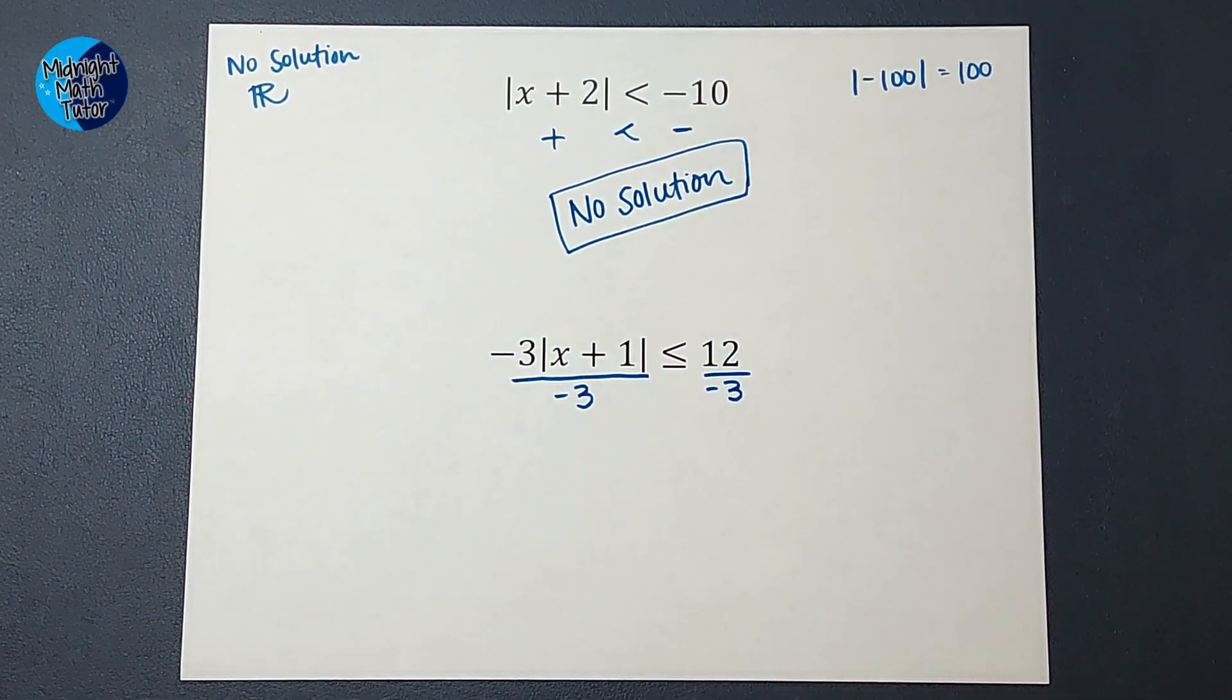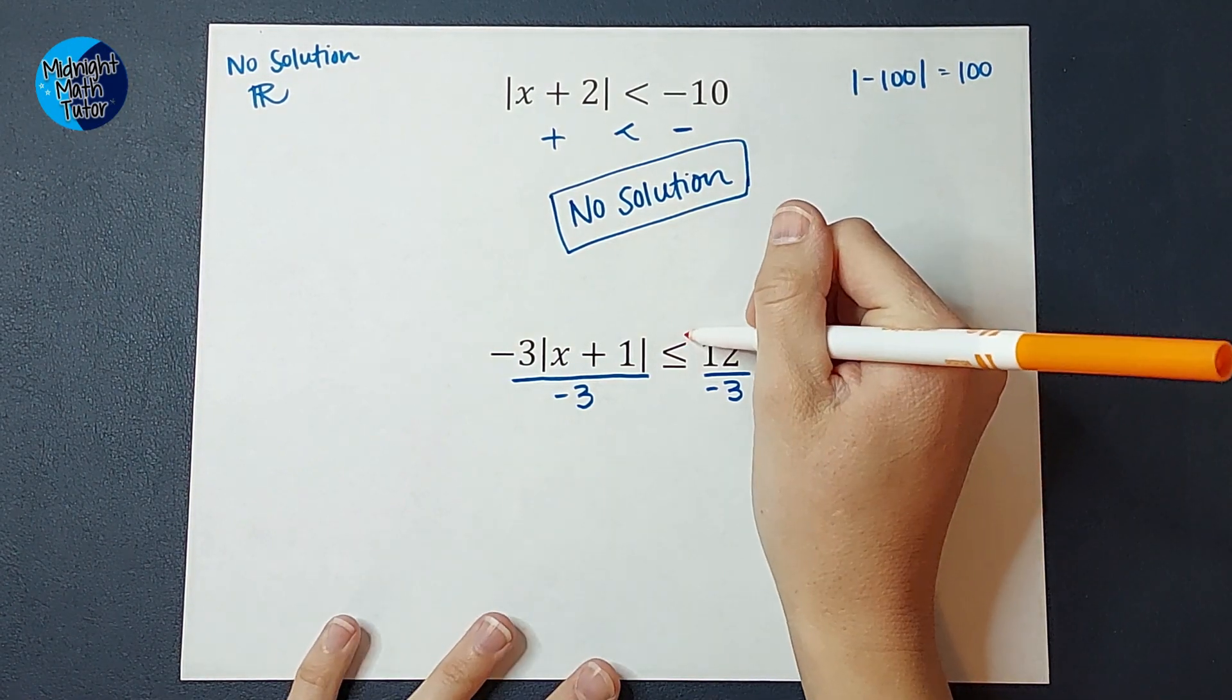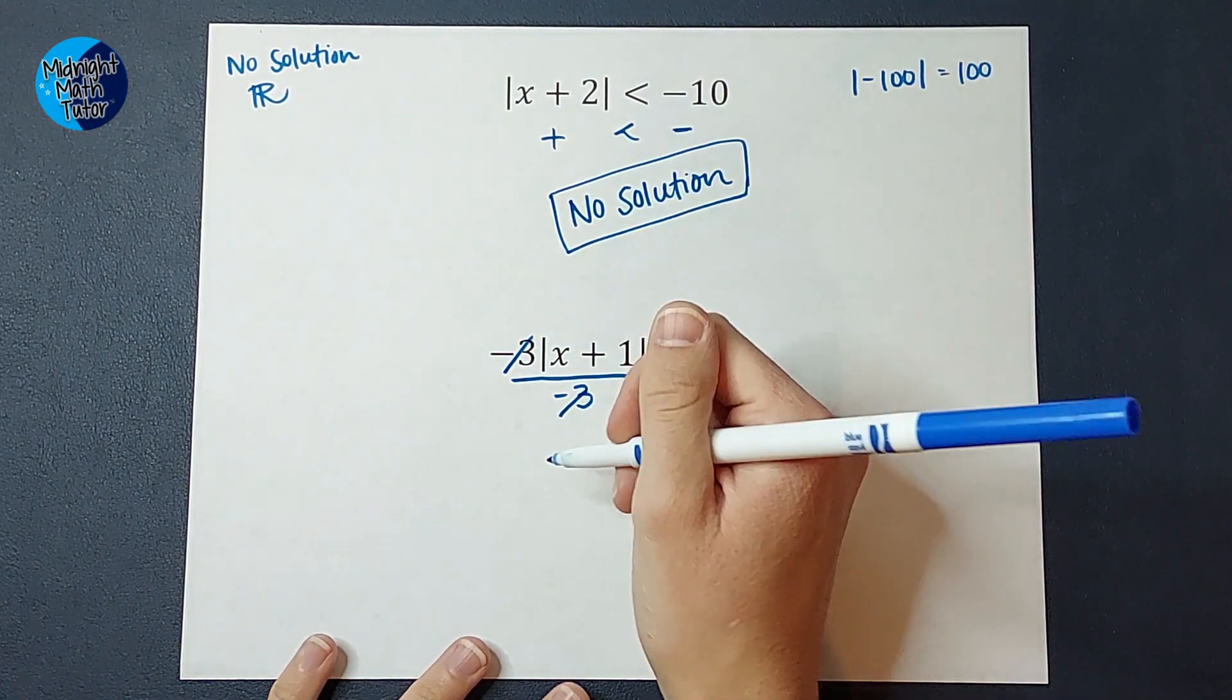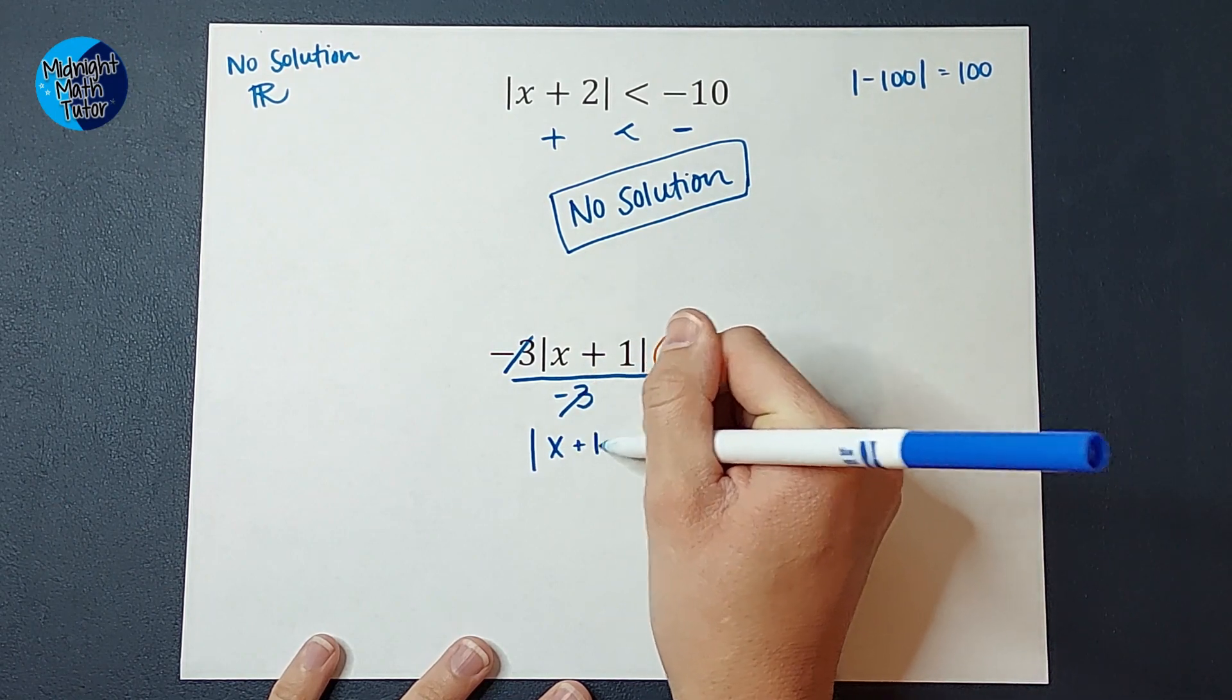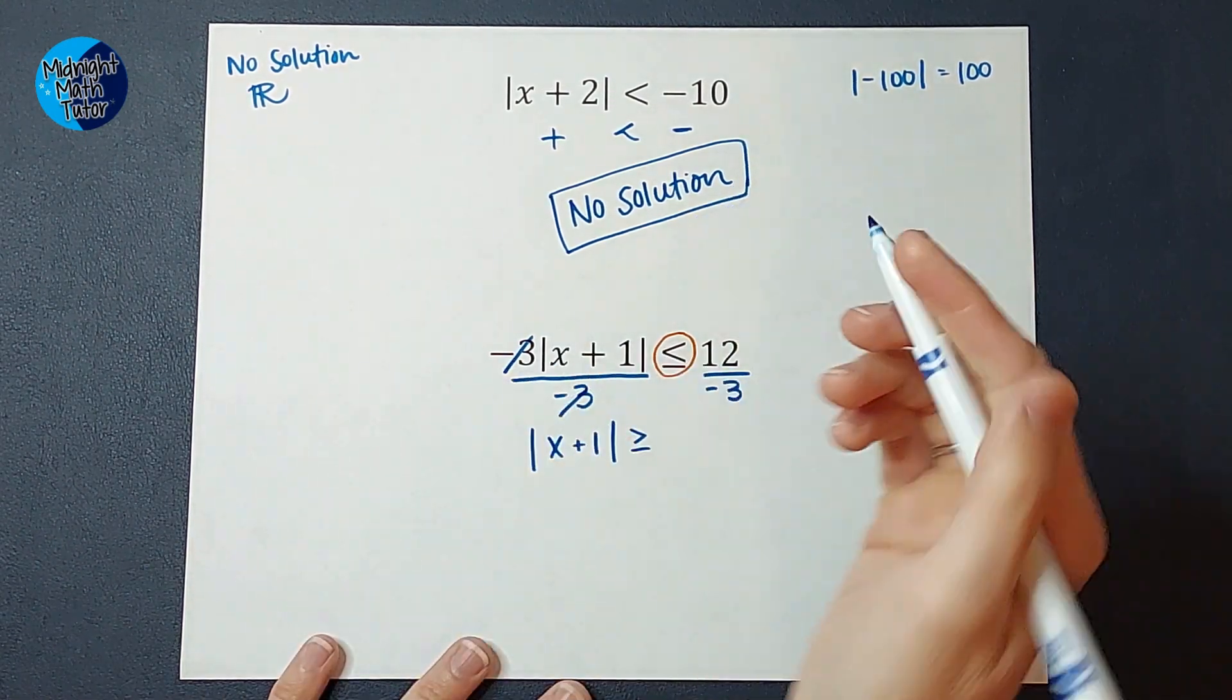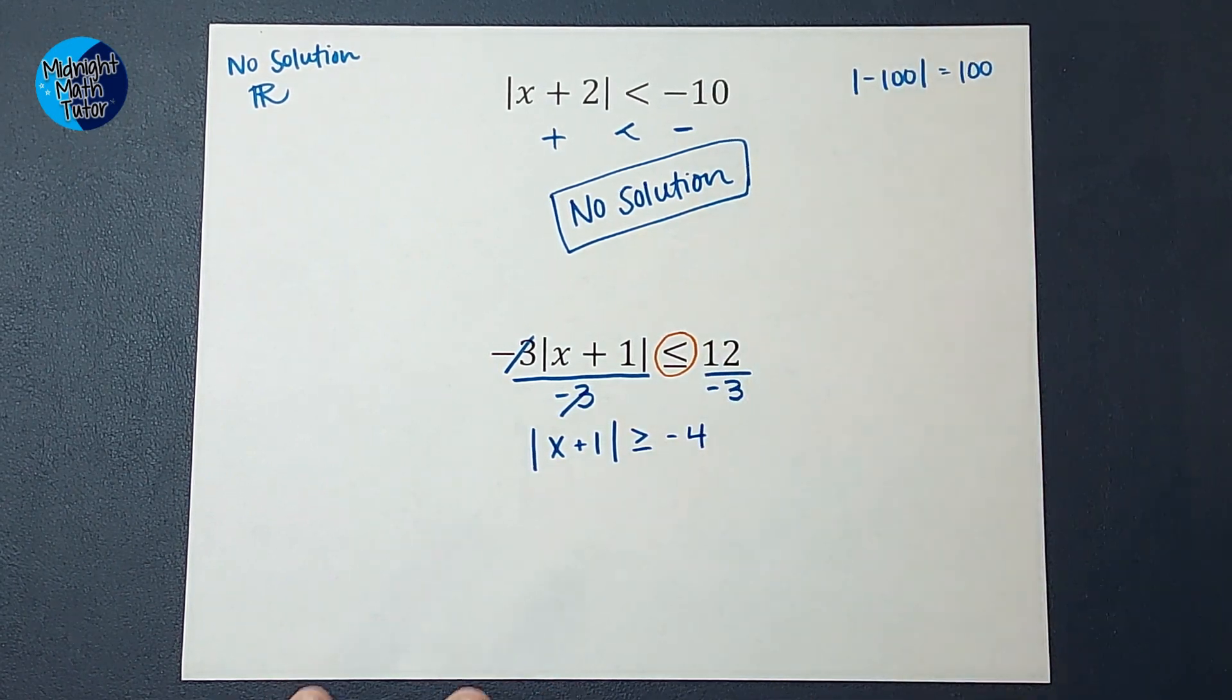First of all, I should have alarm bells going off because I divided by a negative. Do you remember what we do? If we ever multiply or divide by a negative on both sides when we're doing inequalities is we flip that sign. So these cancel and this is going to look like the absolute value of x plus one. I flip that sign because I divided by a negative three. If you're wondering why we flip the sign, I'll link a video in the corner. 12 divided by negative three is negative four.